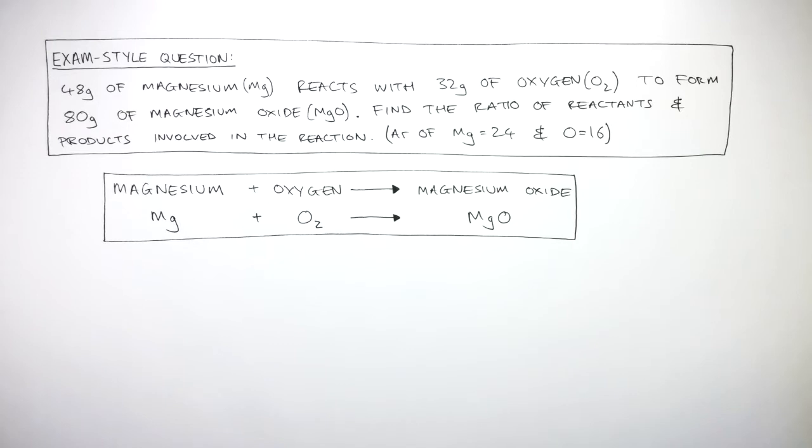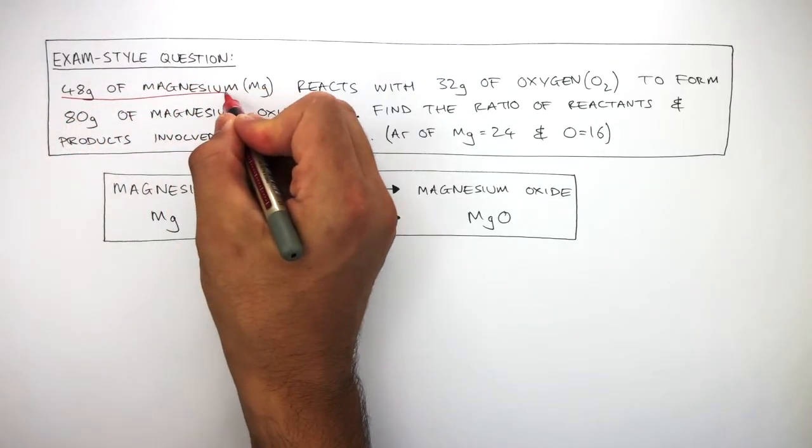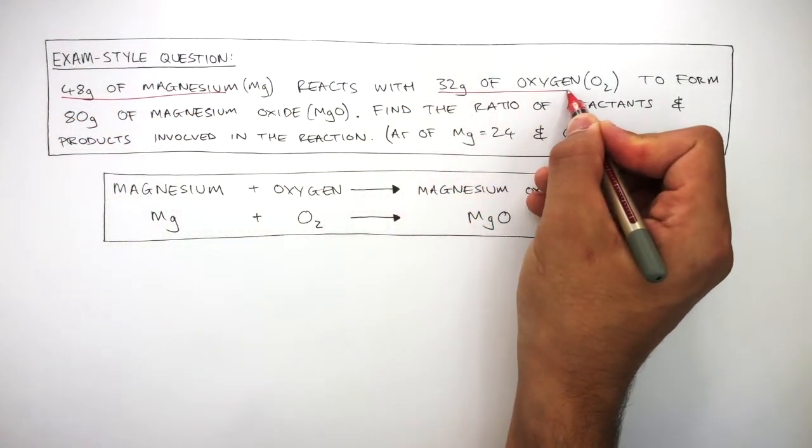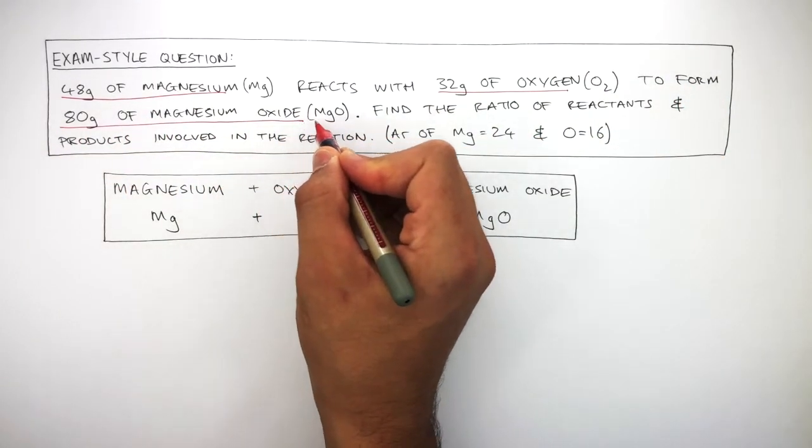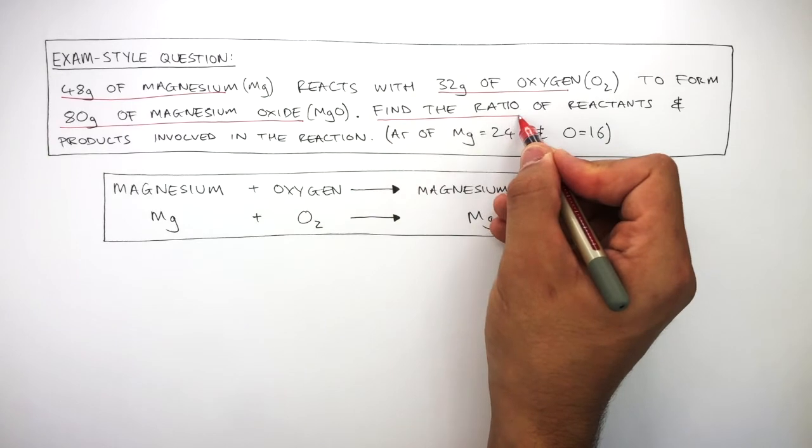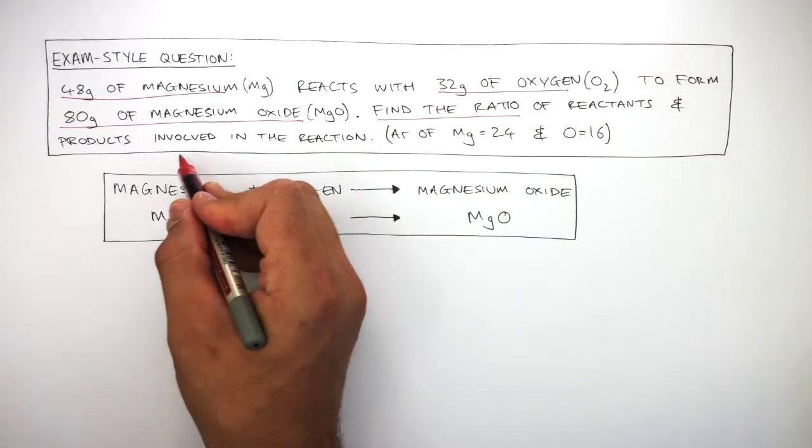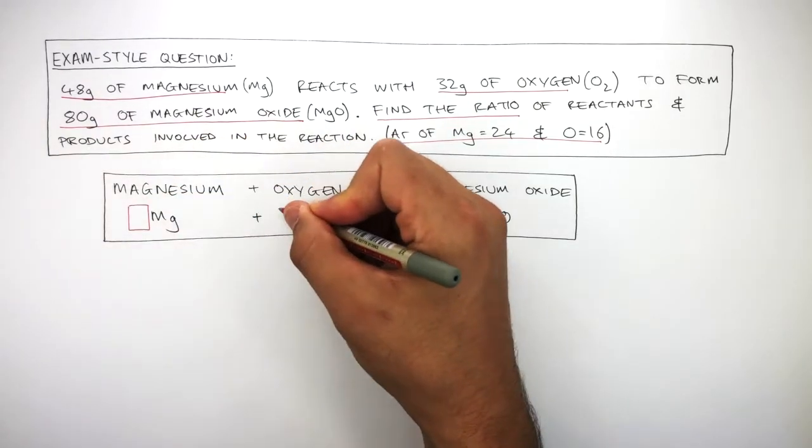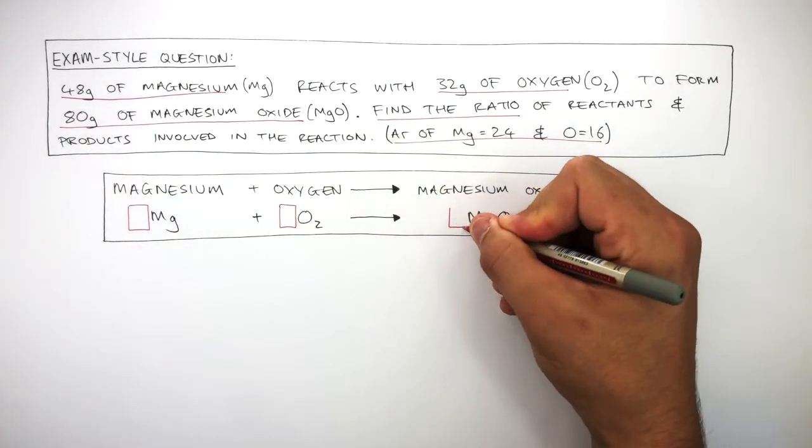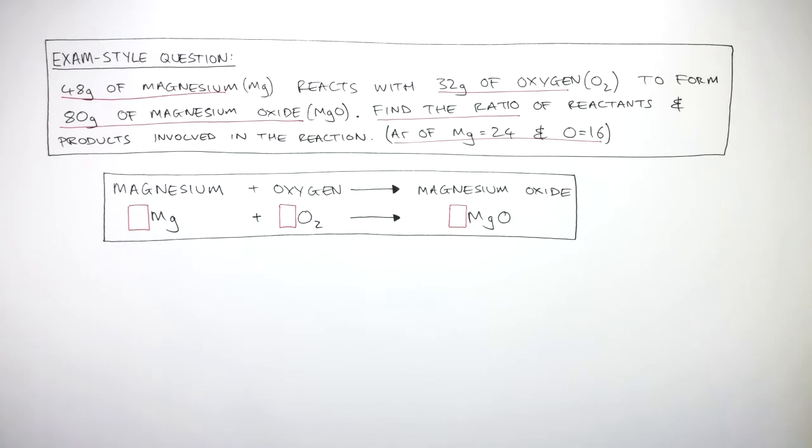The question gives us these masses of 48 grams of magnesium, 32 grams of oxygen, and 80 grams of magnesium oxide. We have to find the ratio of the reactants and products, and we're given these atomic masses. So here I'm drawing these boxes where we have to figure out what is the ratio of reactants and products.